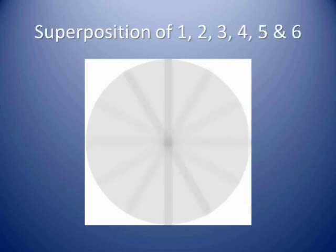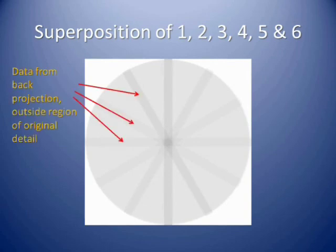However, the back projection process results in information outside of the area where it is expected to be. This corresponds to a blurring of the picture.